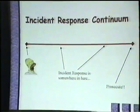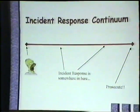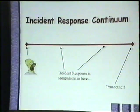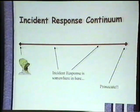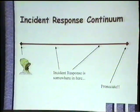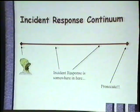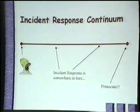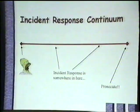This is what I call the incident response continuum — what it looks like from left to right through the entire spectrum. On your far right is prosecution. That's the ultimate. In incident response, if an incident happens, you might need to prosecute somebody. I found a really deep graphic to represent some of the instances I've run across.